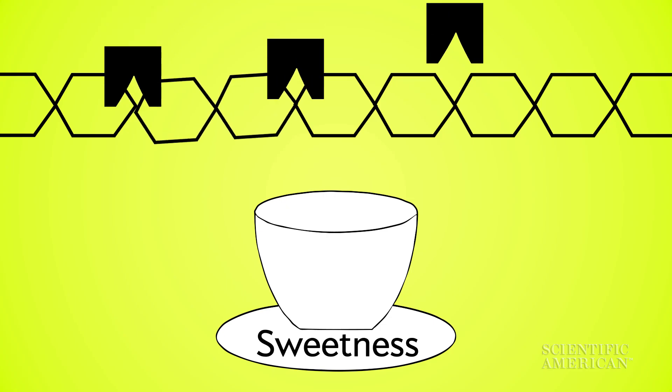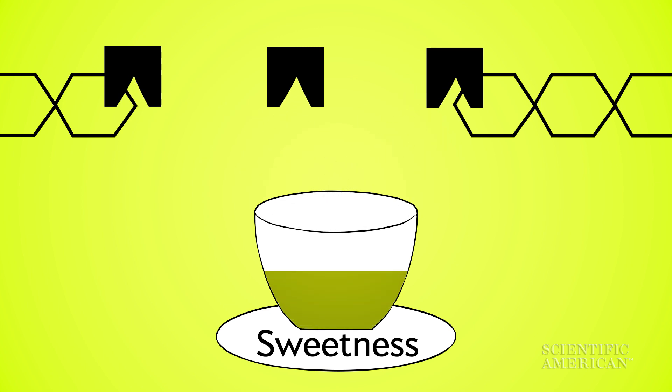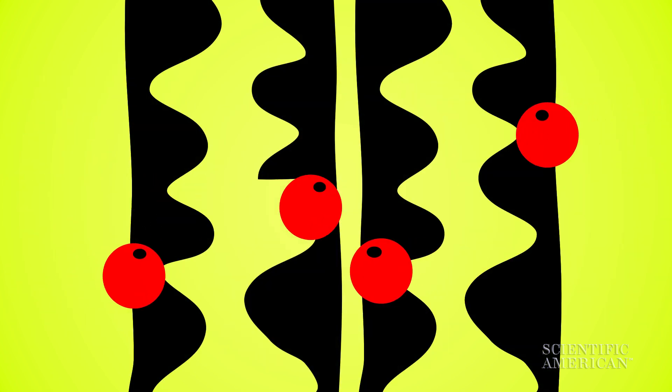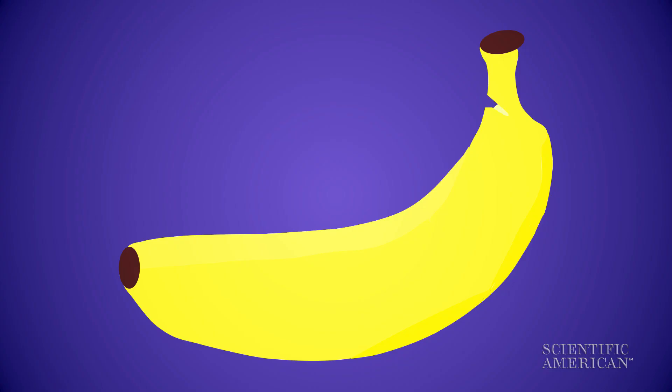Amylase breaks down starch in the fruit into sugar, making the banana sweeter. Pectinase makes the fruit softer by breaking down the pectin in cell walls. As the peel becomes softer and thinner, it is easier to peel open.